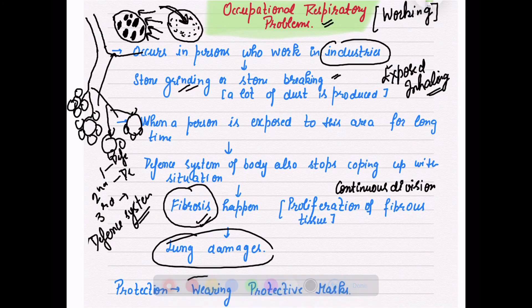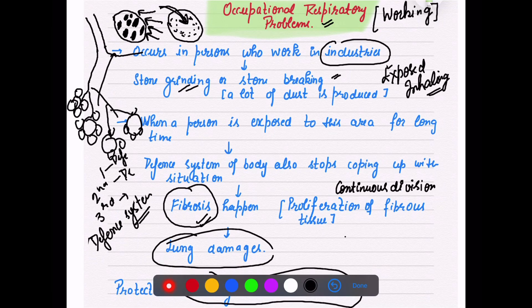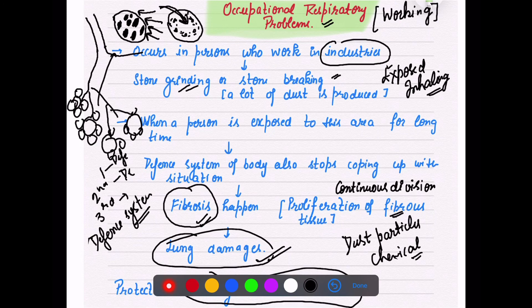That is called your occupational respiratory disorder. How can you protect it? When you stop absorbing or inhaling the dust particles in a regular manner or other kinds of chemicals during your work condition. Otherwise more and more fibrous tissue will start growing in your alveoli and ultimately damage your lungs. So these were the few disorders from your chapter - breathing and exchange of gases.